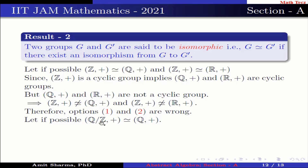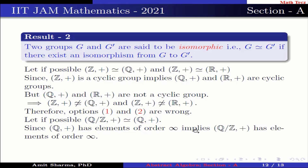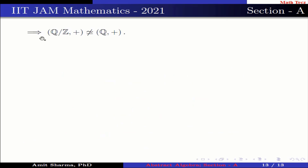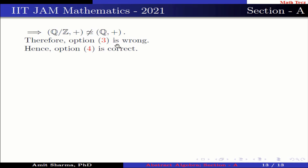If Q/Z under addition were isomorphic to Q under addition, then since Q under addition has elements of infinite order, Q/Z would also need elements of infinite order. But Q/Z under addition has no element of infinite order. Therefore Q/Z is not isomorphic to Q under addition, and option 3 is wrong. Hence option 4 is correct.